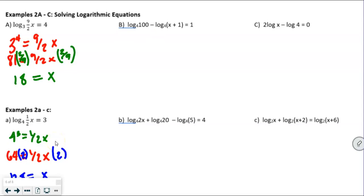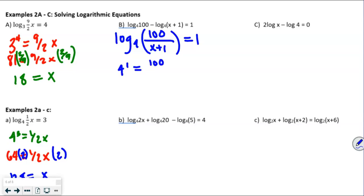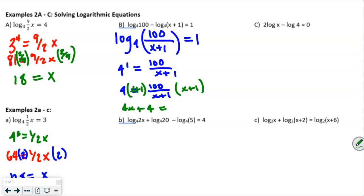Next: log base 4 of 100 minus log base 4 of (x+1) equals 1. Using properties, this becomes log base 4 of 100 over (x+1) equals 1. Converting: 4 to the 1st equals 100 over (x+1), so 4 equals 100 over (x+1). Multiplying both sides by (x+1) gives 4x plus 4 equals 100. Subtracting 4 gives 4x equals 96, and dividing by 4 gives x equals 24.